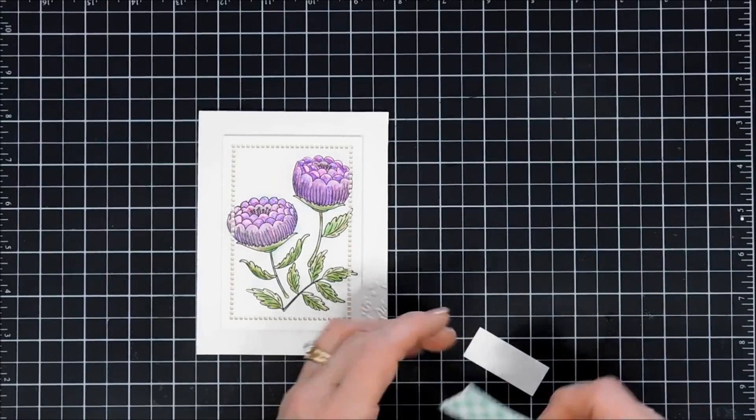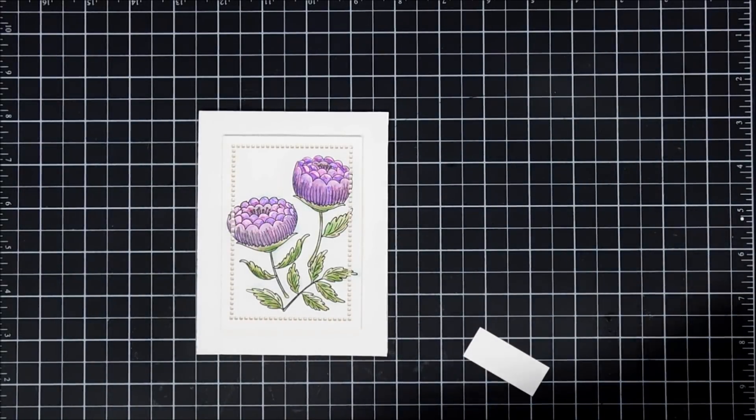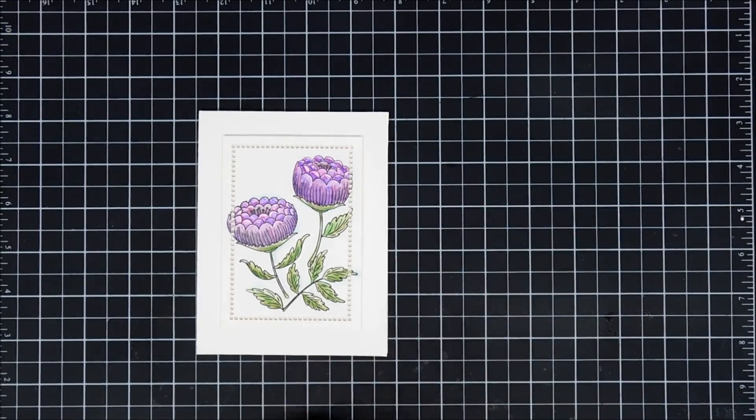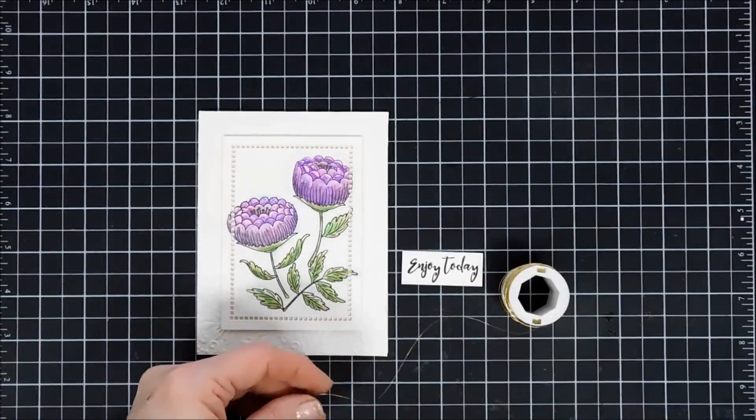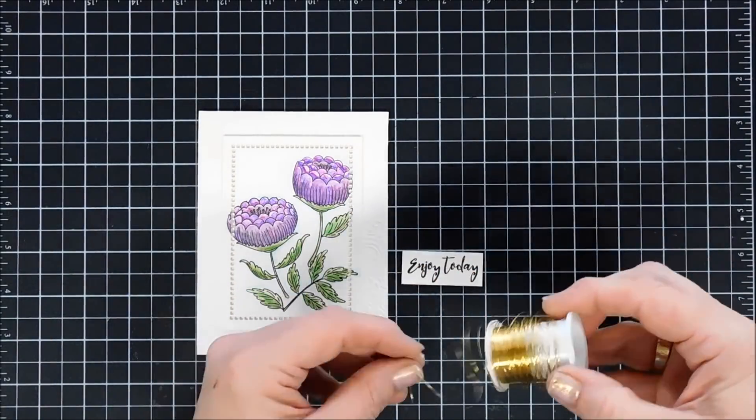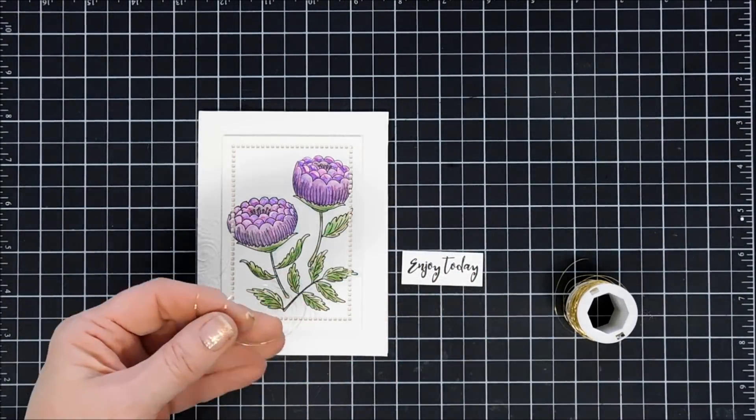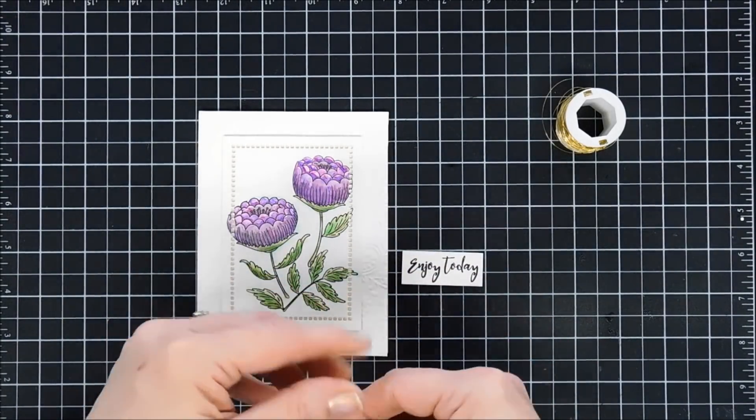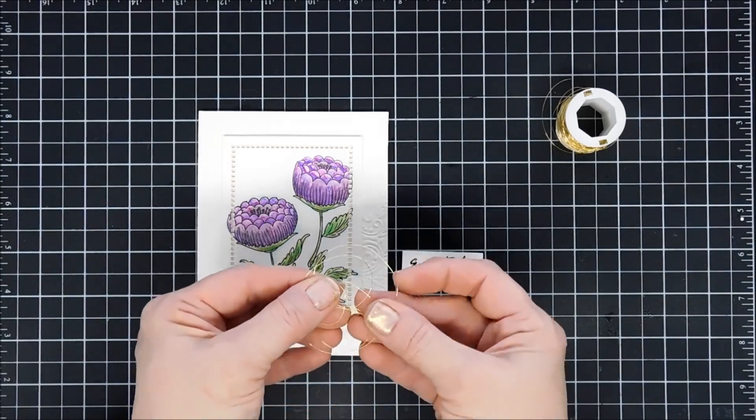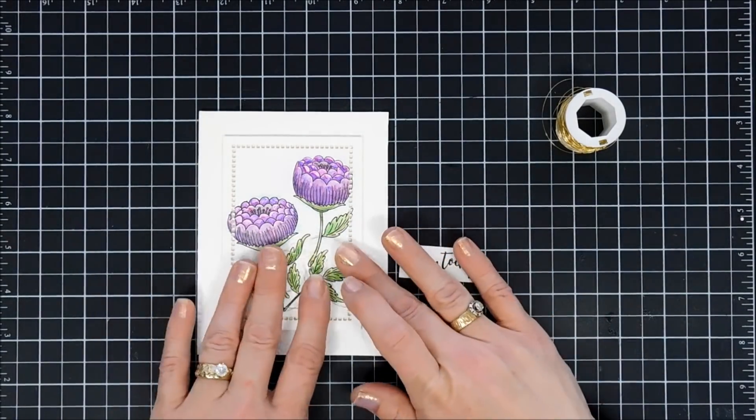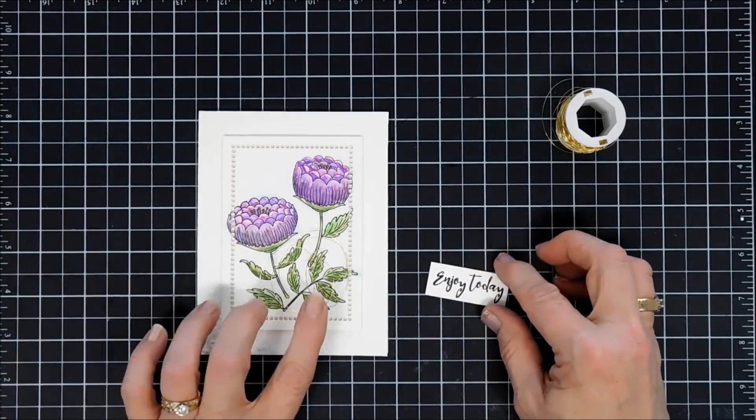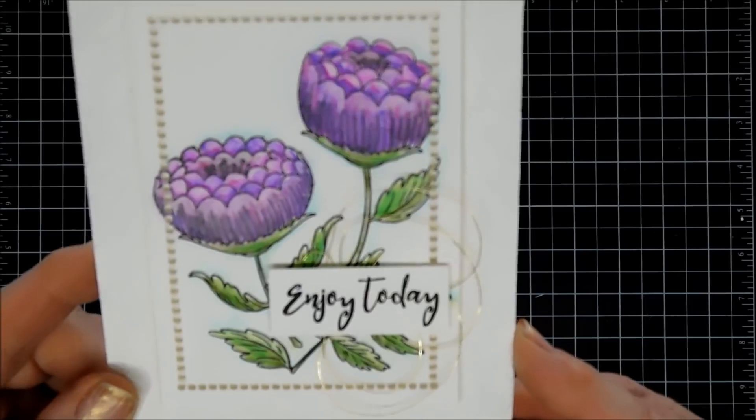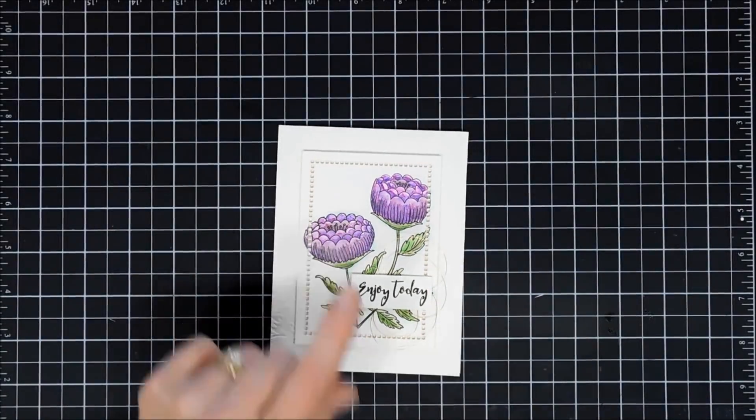Now I'm going to add some foam tape behind my sentiment. I wanted to add something with a little bit more texture to my card. I'm going to bring in some wire. This is a real thin gauge beading wire, the finest one that they had. It's gold, and I thought it'd be pretty to just do a little bit of a swirl behind my little sentiment. It's very subtle, but it doesn't take away from my pretty flowers that we just painted.